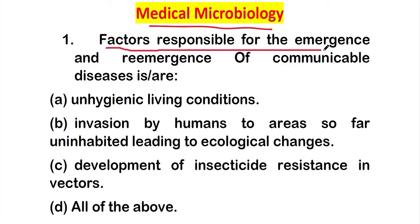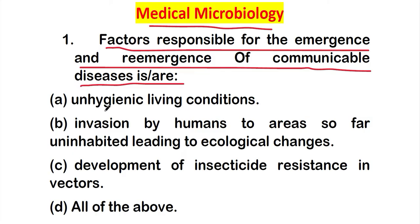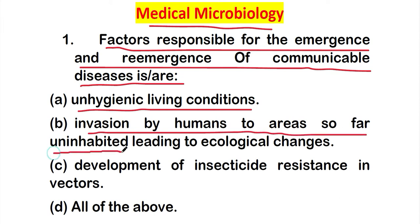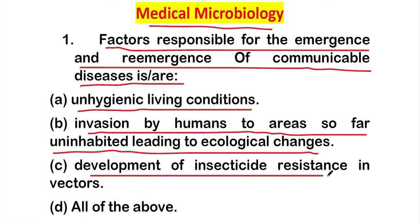Question 1: Factors responsible for the emergence and re-emergence of communicable diseases — option A: unhygienic living conditions; option B: invasion by humans to areas so far uninhabited leading to ecological changes; option C: development of insecticide resistance in vectors.